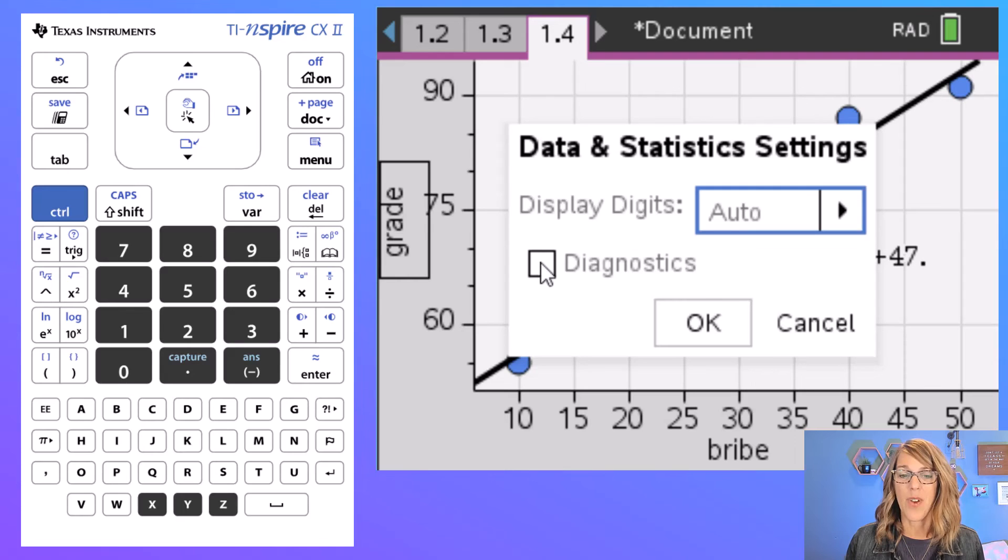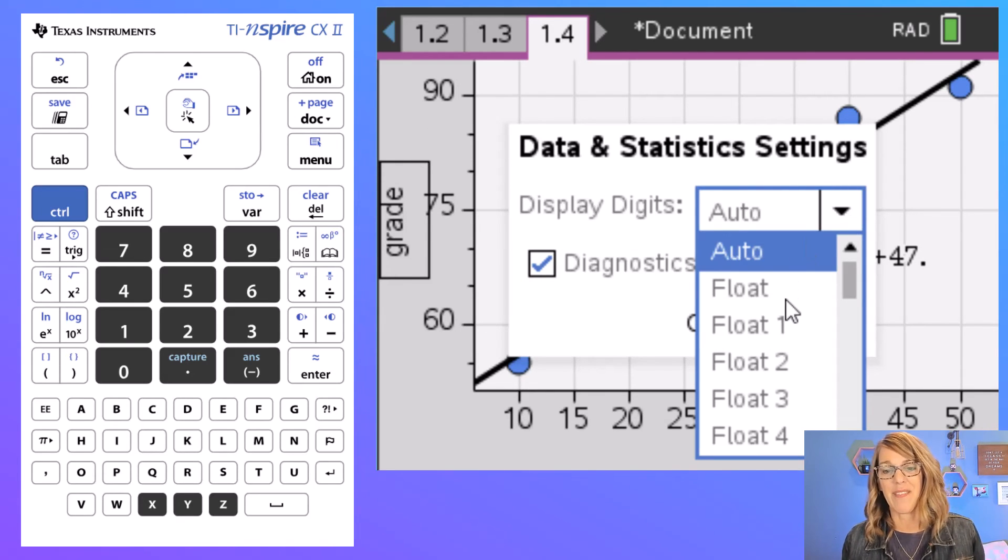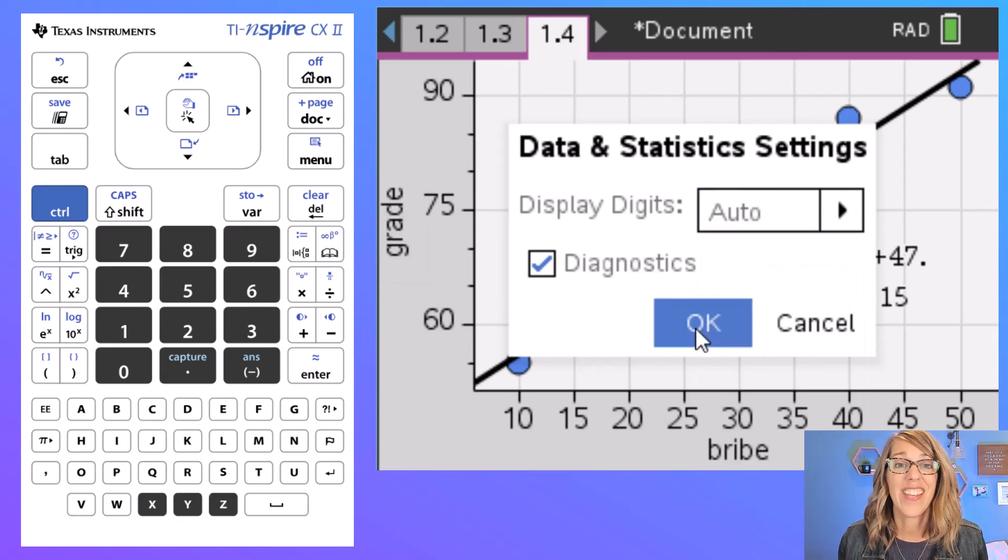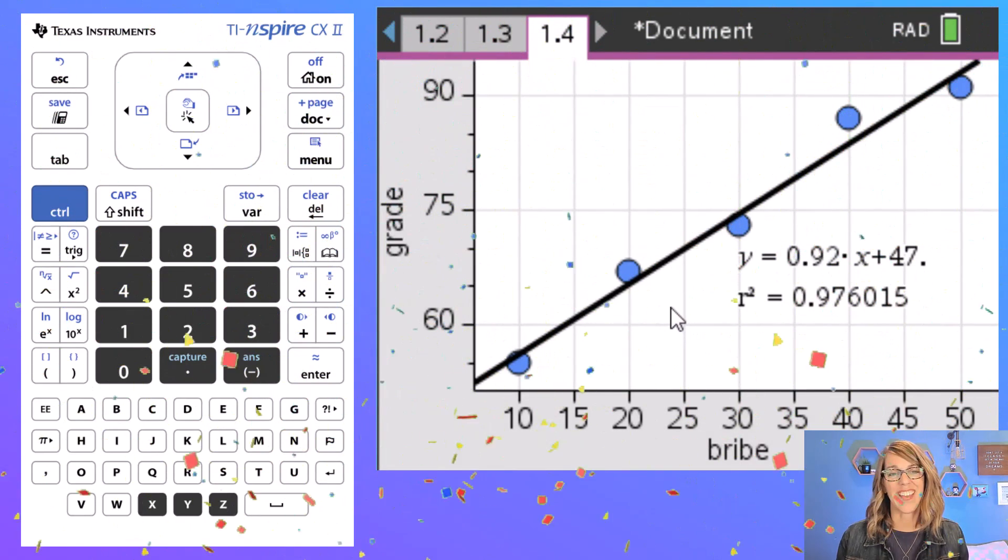And above that are my display digits. I can increase the number of digits that this displays by opening this drop down and then I've got all of those choices. But auto worked just great for me. Let's go ahead and escape that and then hit okay, and we've got that r squared value there.